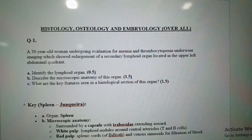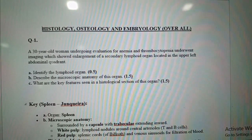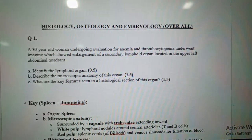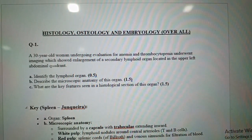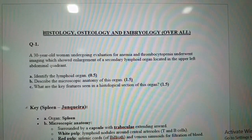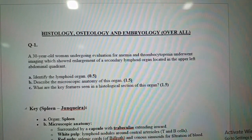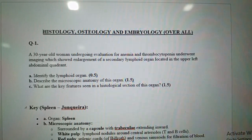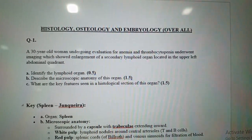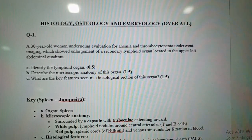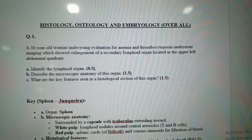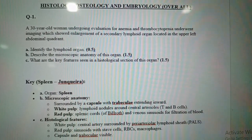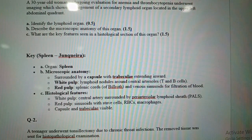As an extra note, in splenomegaly the spleen enlarges obliquely and can extend toward the right side of the abdomen — but this is just extra knowledge and not likely to come in your exam. Based on the anemia, thrombocytopenia, and the secondary lymphoid organ in the upper left quadrant, this is obviously the spleen.